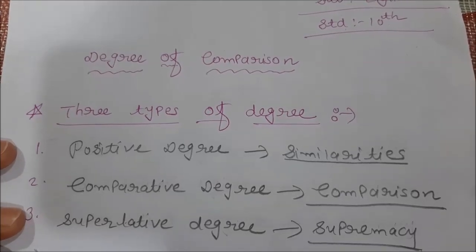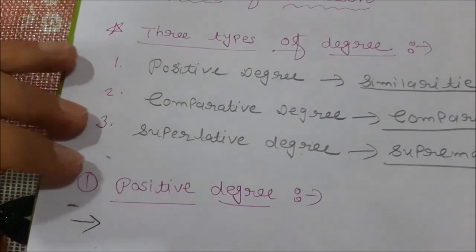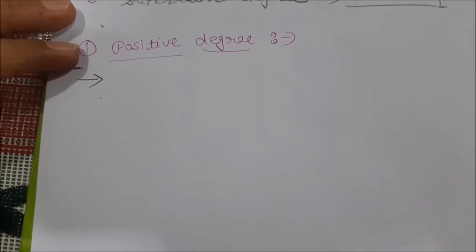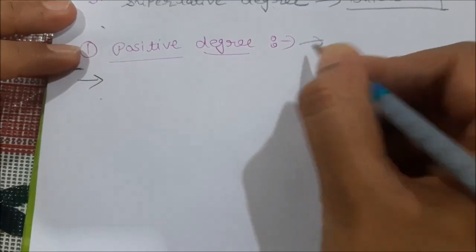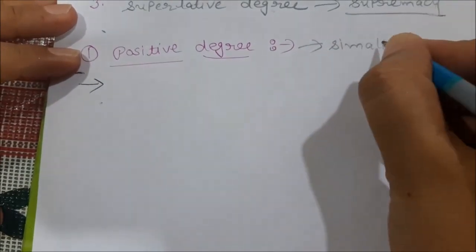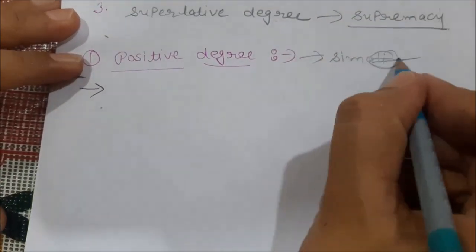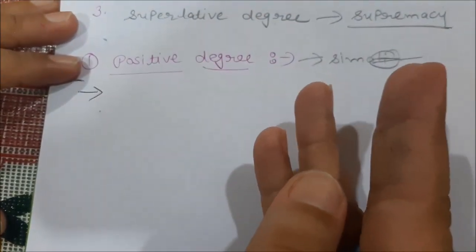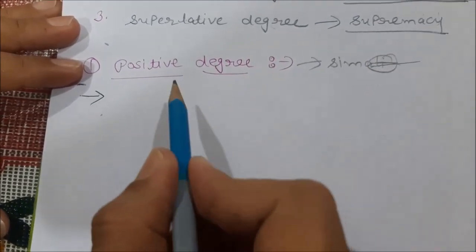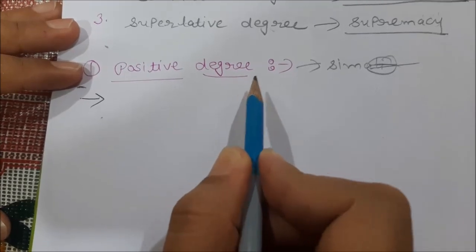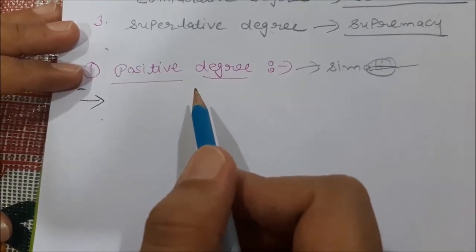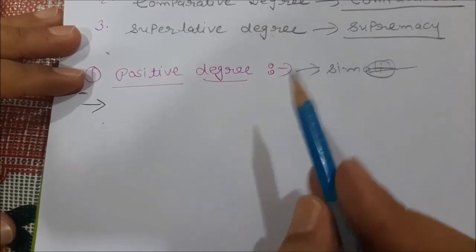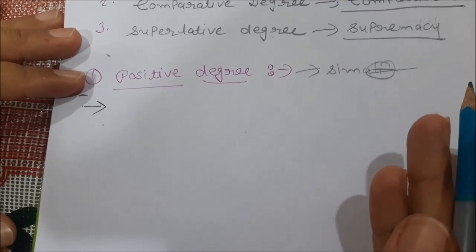One is superior to another. Now let's start with positive degree. As I told you, it is used to show similarities. Keep in mind: similarities can be between two things or more than two things, and different rules apply for each. You should know whether there is a similarity between two things or more than two things when reading a sentence.